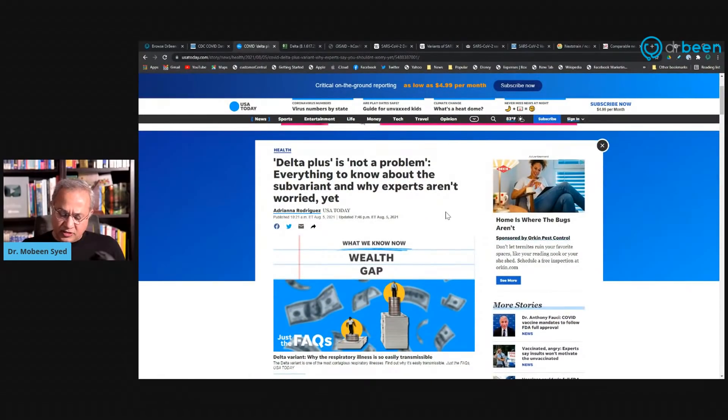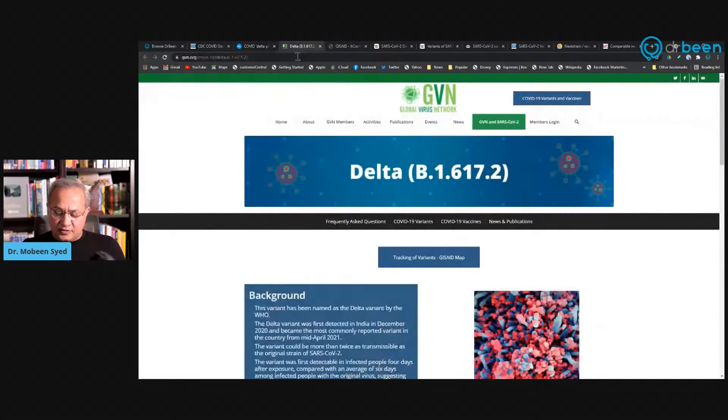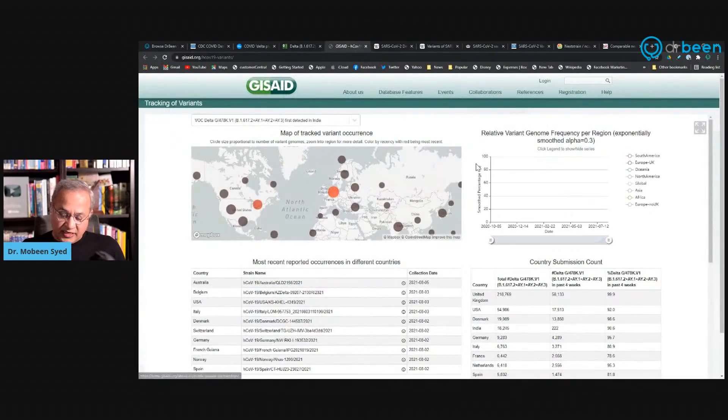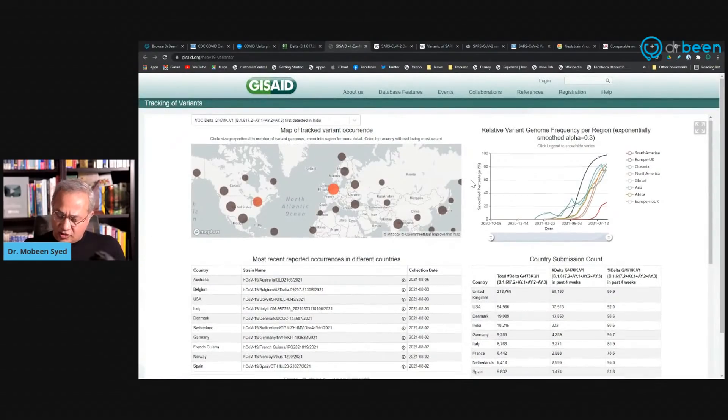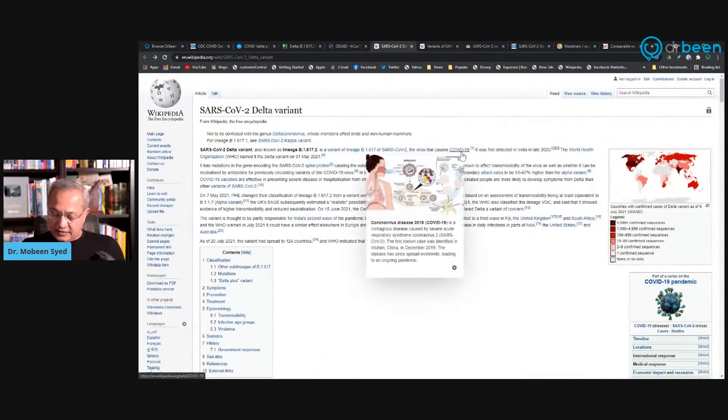This is USA Today, but an interesting discussion here. This is Delta Plus on GVN, Global Virus Network. This is GISAID. Again, you like it or not, there is some data here that is useful. Wikipedia. Again, if you do not like it, you can read from other places as well. But these are those resources that are freely available. That's why I put them out.